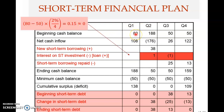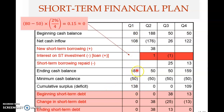The beginning cash balance of 80 million minus the 50 million minimum gives 30 million in excess surplus, which earns 0.5% interest per quarter, yielding 0.15 million dollars. Rounded to the nearest million, this is zero. The ending cash balance of 188 million minus the minimum of 50 gives a cumulative surplus. Since you have a 138 million surplus, no changes are needed.